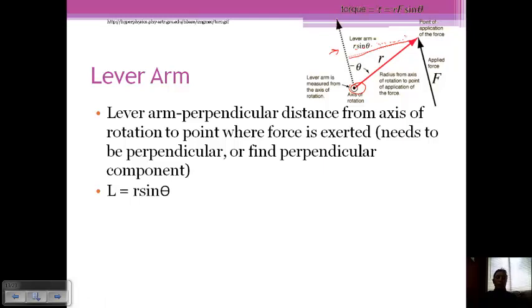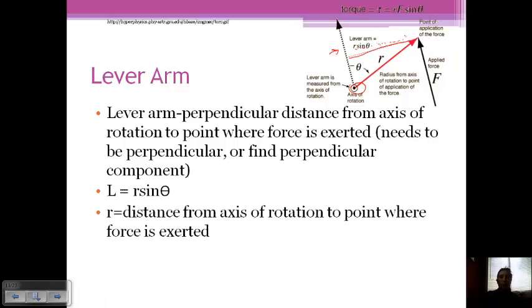And so we can use an equation to find this, which is R times sine of theta, where R is the distance from the axis of rotation to the point where the force is exerted. And so that's this red arrow here directly from the axis to the point of the force, whereas the lever arm is just the perpendicular. And then theta is the angle between the force and the radius, and that's why the force is also drawn here. So we've just transcribed it so that we can measure the angle.